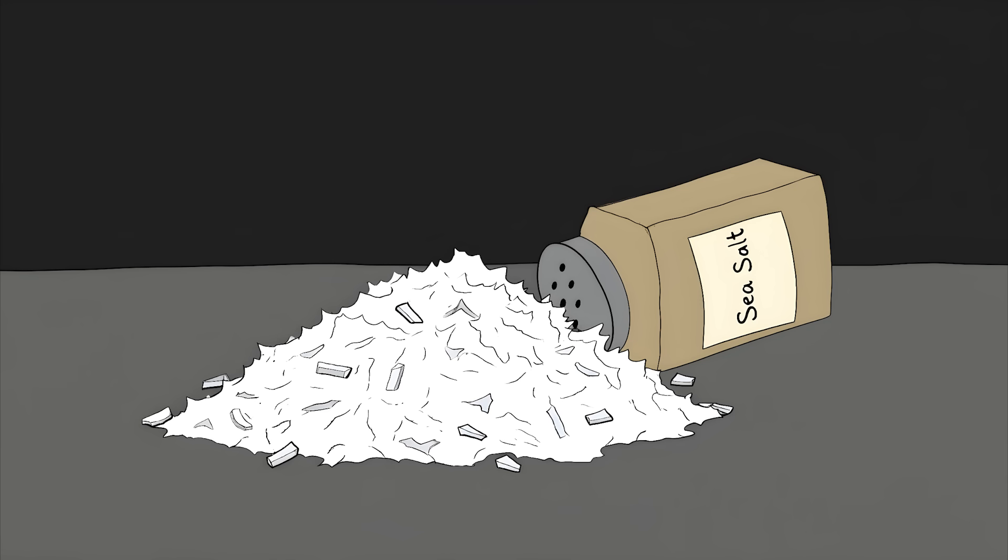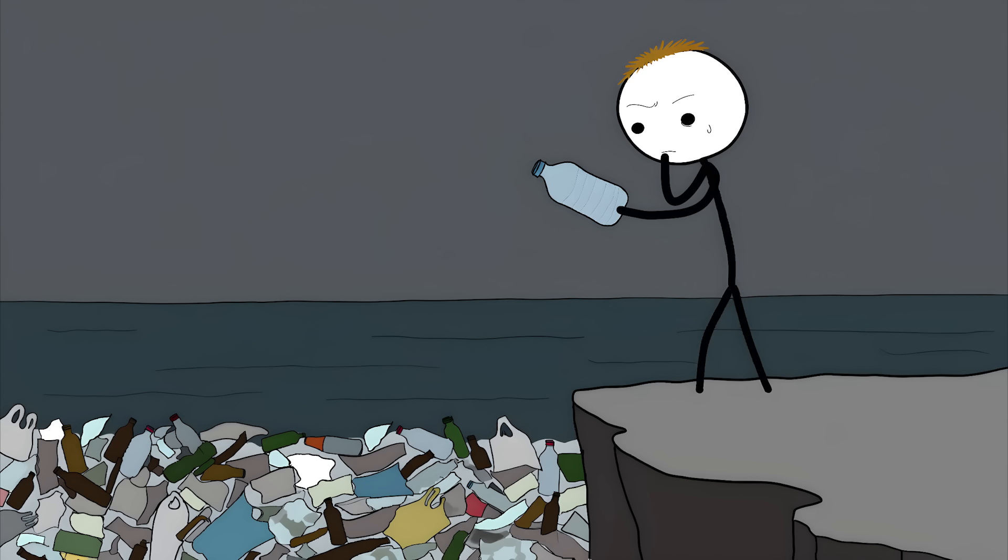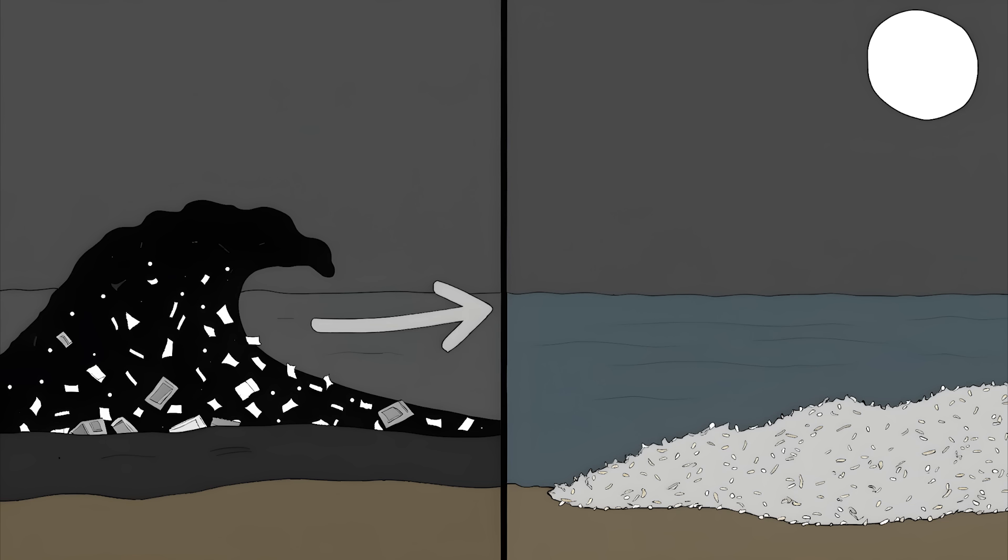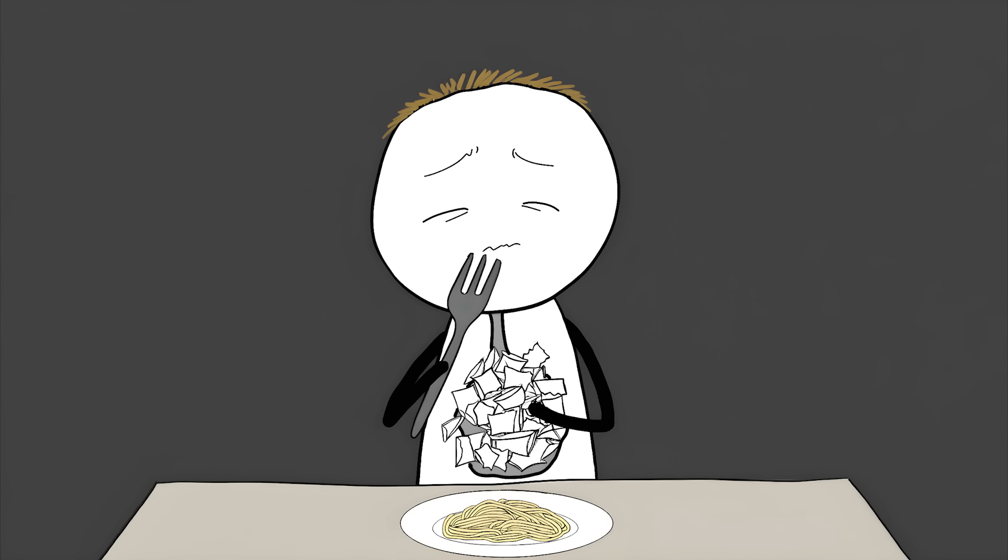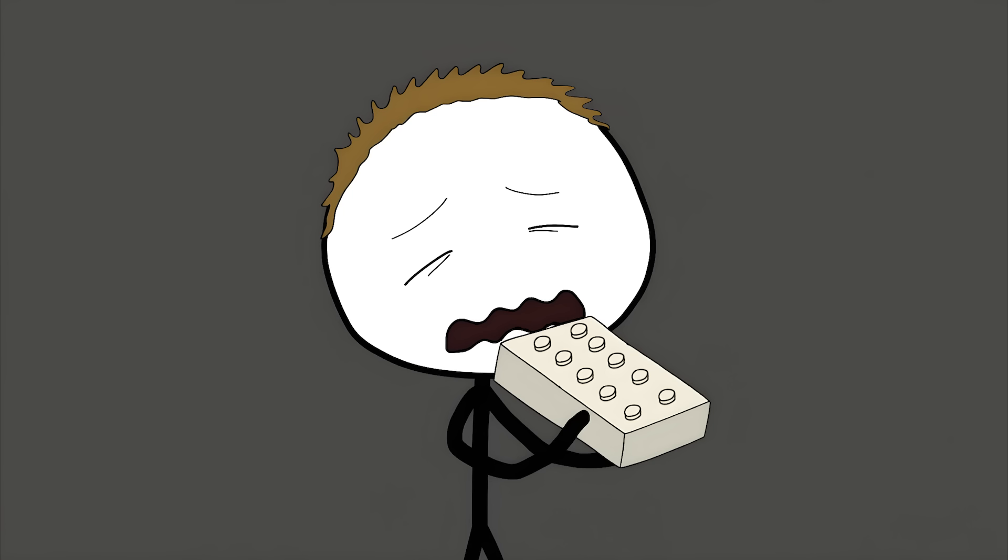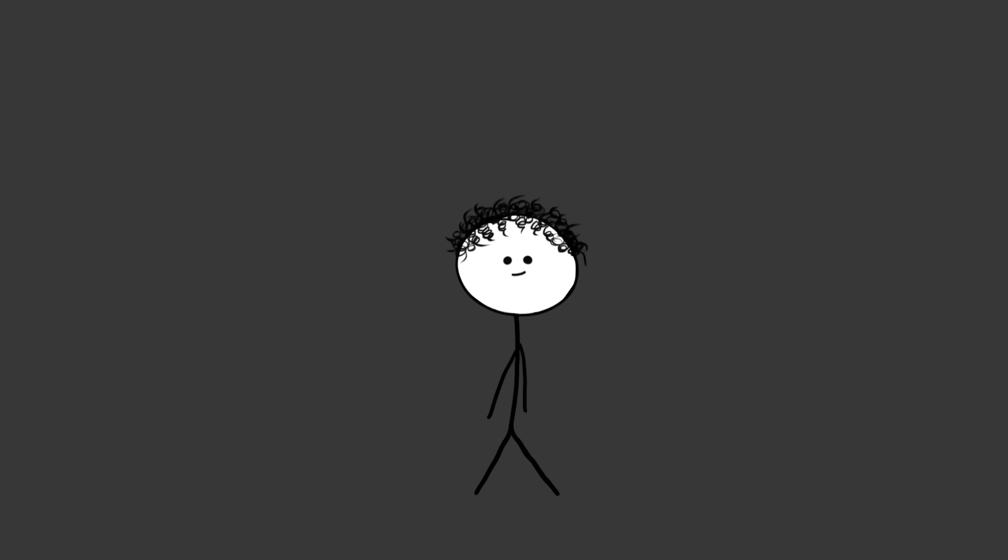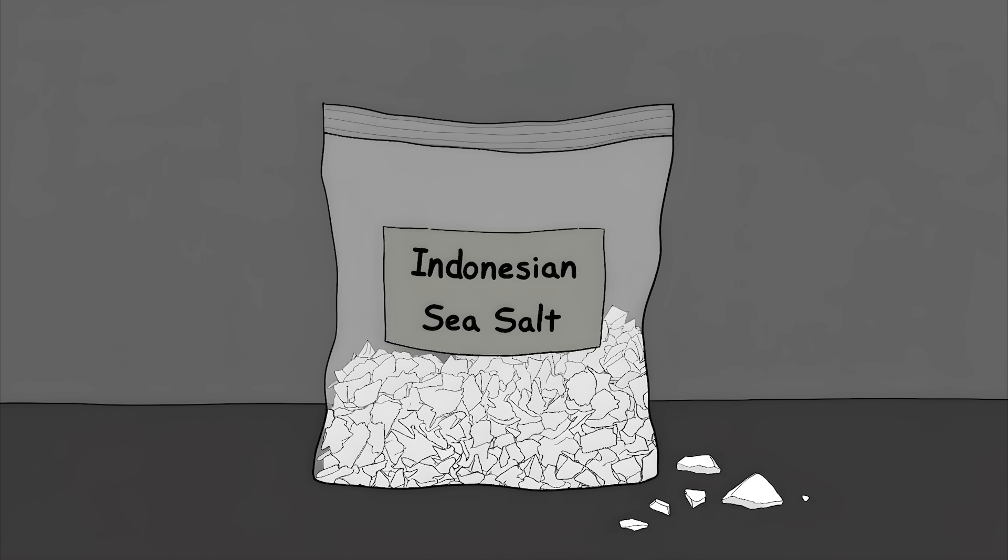Sea salt, however, is often the worst offender. We dump about 8 million tons of plastic into our oceans every year. That plastic breaks down into tiny pieces that end up in sea salt when the water evaporates. The average person eats about 2,000 pieces of microplastic just from salt every year. That's like eating a tiny Lego brick piece by piece. Asian sea salts are particularly bad. One study found that Indonesian sea salt had the highest levels with thousands of plastic particles per kilogram.